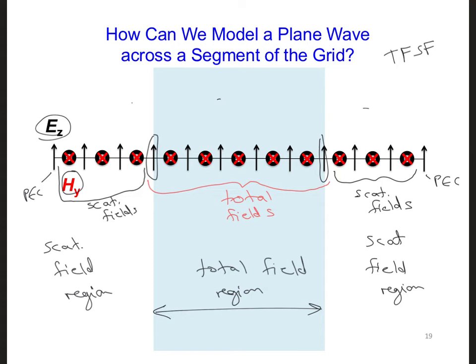We just need to remember that some of the EZs in our EZ array are total fields and some are scattered fields. And similarly for the HY array.